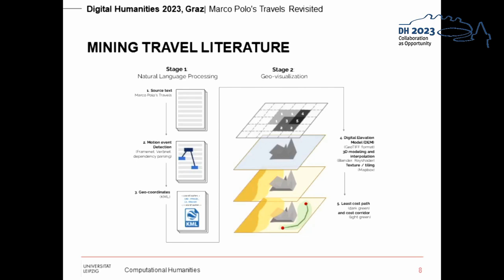Our proposal for a systematic workflow includes the following steps. First, we use natural language processing methods to reconstruct Marco Polo's route from the actual written text. We identify place names with the help of a gazetteer and machine learning. Movement between locations is then detected with an information extraction process in a second step. In the third step, we identify the geo-coordinates of the place names annotated in the text. With data based on the digital elevation model Copernicus Global DEM combined with satellite photos, we create representations of the landscape described in the book using Blender and RayShader in R. Finally, this landscape is used to calculate optimal paths depending on the landscape shapes.